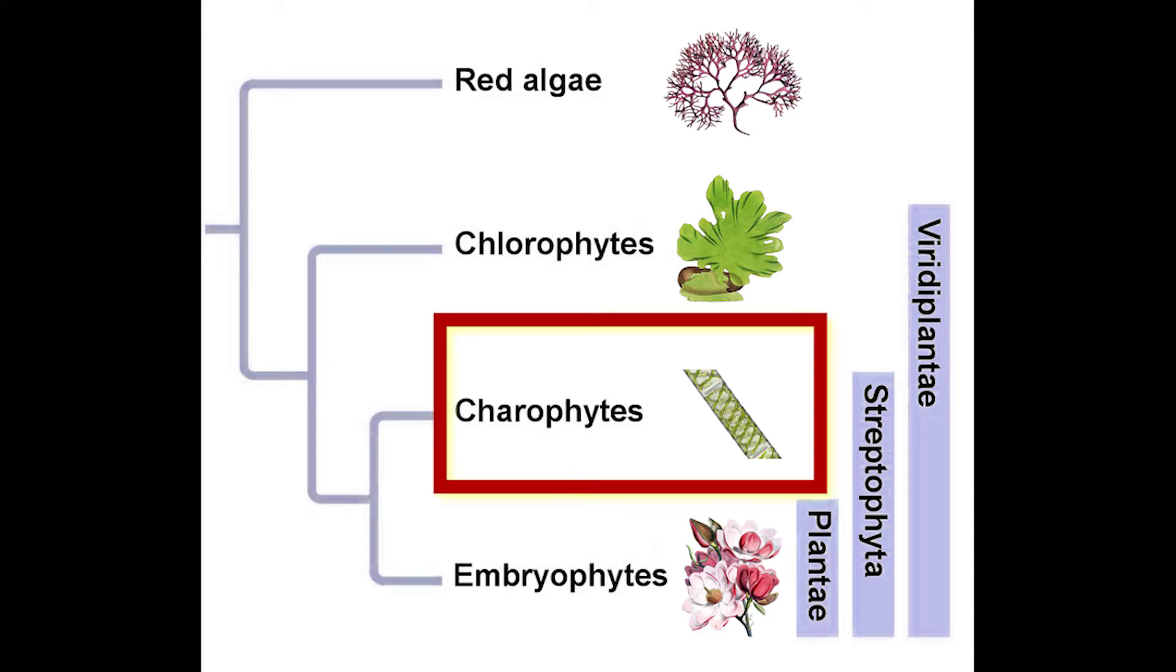The carophytes are the closest ancestors to the modern plants, and it contains the single-celled carophytes known as the Desmids.